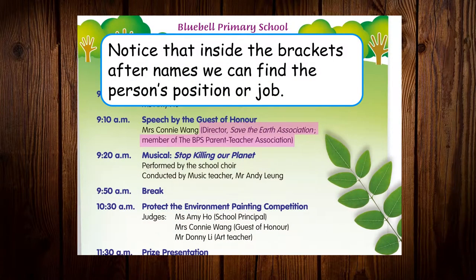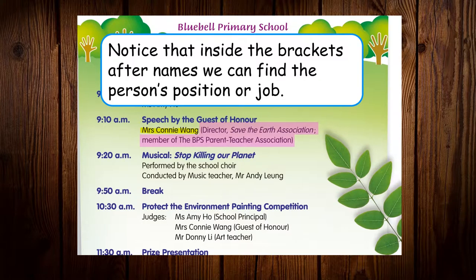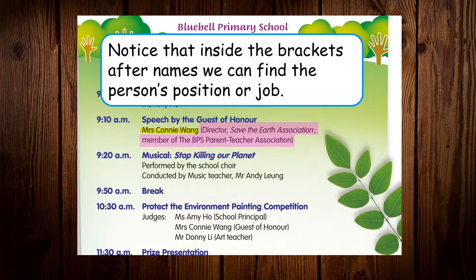This one is a bit special. Notice that inside the brackets after the names, we can find the person's position or job. So you can see here, Mrs. Connie Wang is the name. Director, Save the Earth Association — Member of the BPS Parent Teacher Association — this is her title. That means what she does as a job.